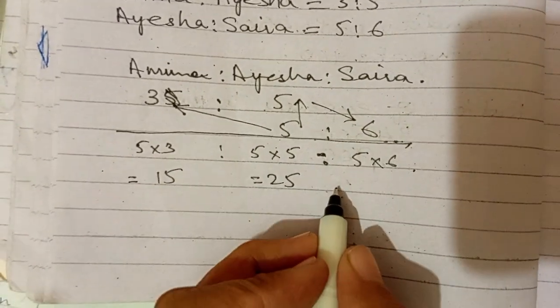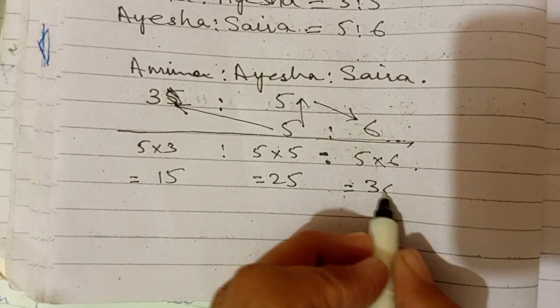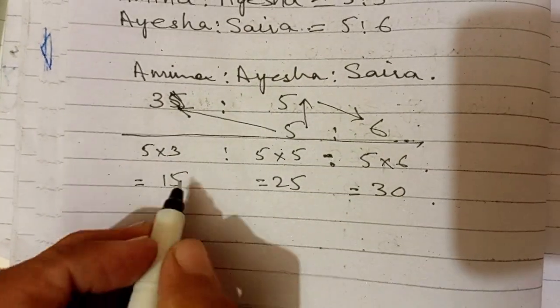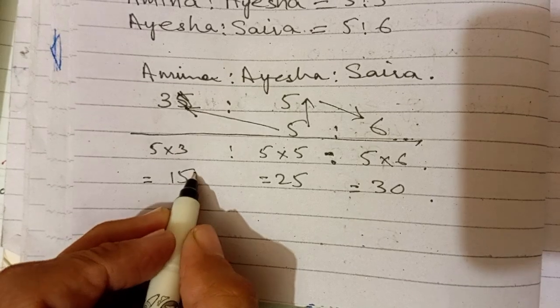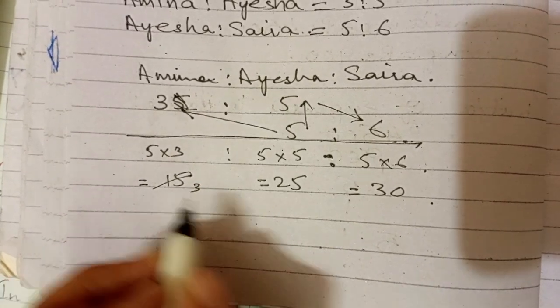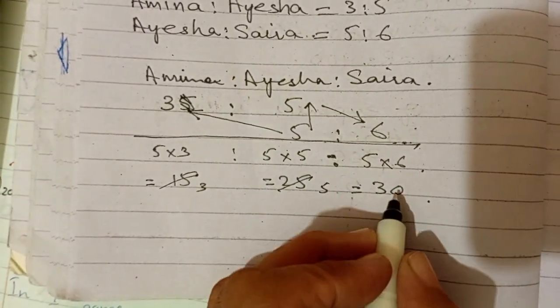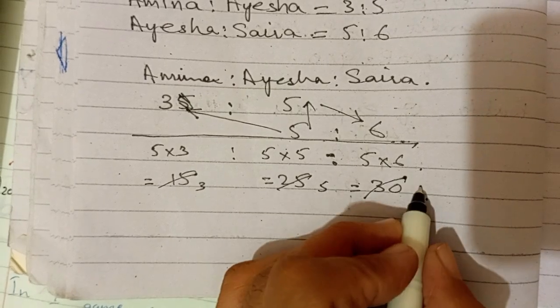15, 25, then 30. اب غور سے دیکھیں 3 ہو جا رہے ہیں 5 کے table سے تو اس کا انصر کیا آئے گا 5 3s are 15, 5 5s are 25, and 5 6s are 30.